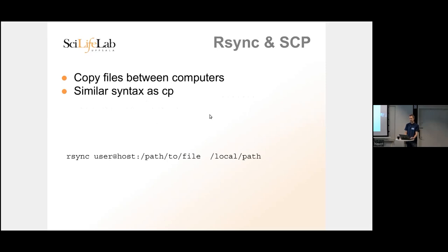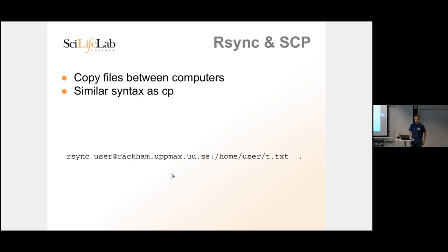Now we'll cover copying files to and from UPPMAX. The 'cp' command only knows about the current computer, so to copy files between different computers you need a different program. We can use two options: 'rsync' or 'scp'. Both have a similar syntax to cp — source file first, then destination. For remote systems you specify the login as username@hostname: followed by the path.